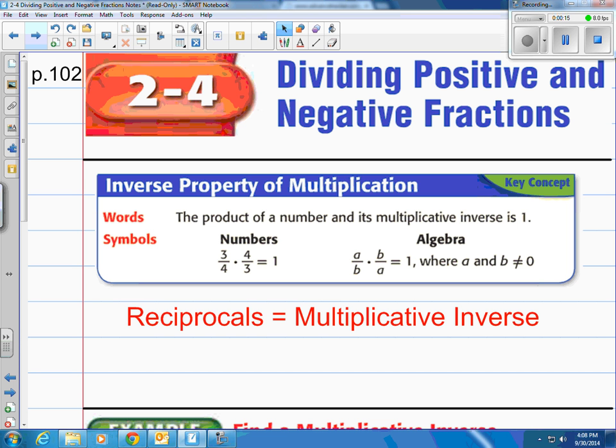Key concept here is the inverse property of multiplication. What it says is the product of a number and its multiplicative inverse is 1. They have 3/4 times its multiplicative inverse, which you might call the flip of the fraction. It's 4/3. That equals 1.